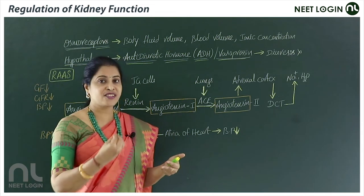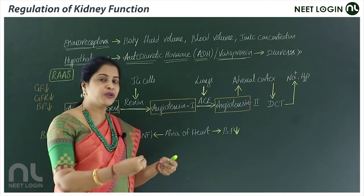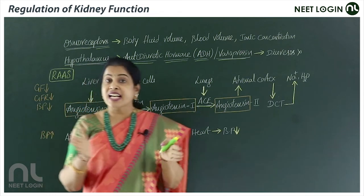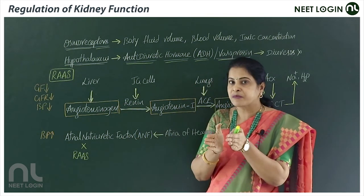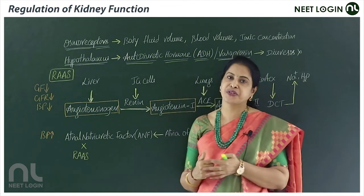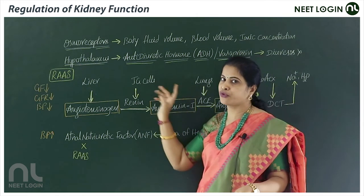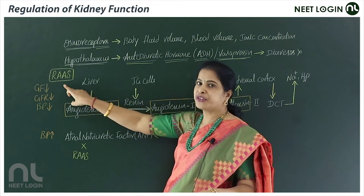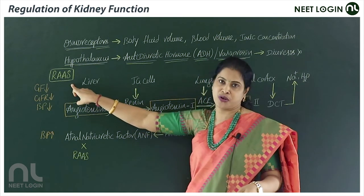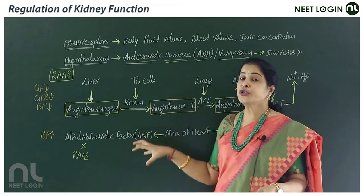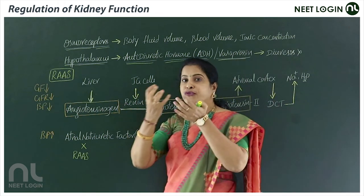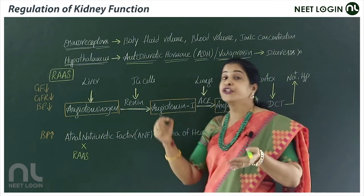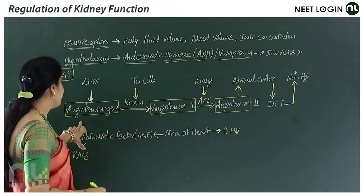ADH is also called vasopressin because it constricts blood vessels — 'vaso' relates to blood vessels and 'pressin' means pressing/compressing — so it increases blood pressure. Now, an important mechanism is the RAS: R stands for Renin, A for Angiotensin, another A for Aldosterone. RAS is activated when glomerular flow decreases — when blood pressure is low, blood flow to the glomerulus decreases, GFR decreases, and RAS is activated.